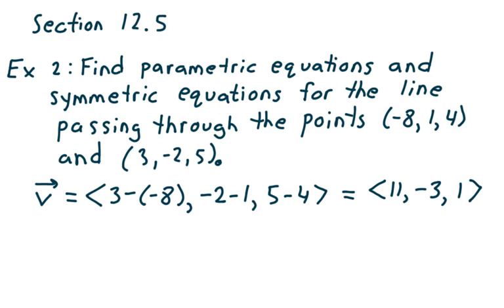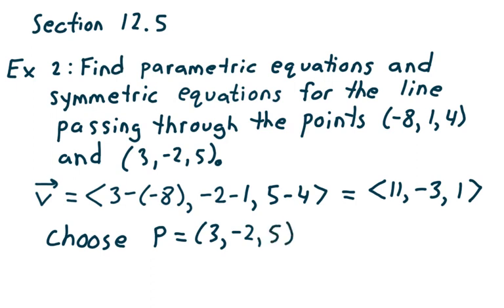Now we get to choose a point, and I claim you can choose any point you want. I'm going to choose P, which is equal to 3, negative 2, 5. Both points lie on the line, so it doesn't matter which point you choose. For this example, I'm going to write down the vector equation first. I know it didn't ask for it, but I thought it'll be more natural to show you how to get the parametric equations from the vector equation.